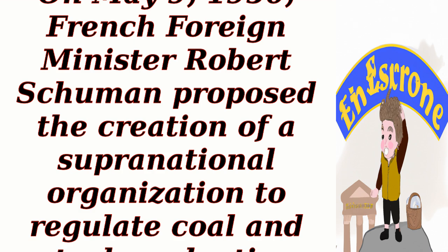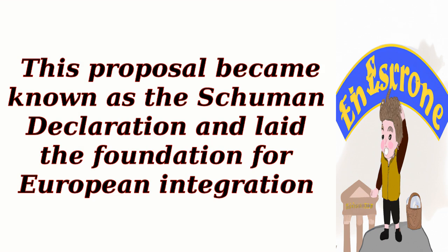Schumann Declaration, 1950. On May 9, 1950, French Foreign Minister Robert Schumann proposed the creation of a supranational organization to regulate coal and steel production among European countries. This proposal became known as the Schumann Declaration and laid the foundation for European integration.